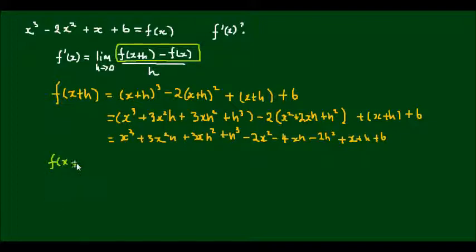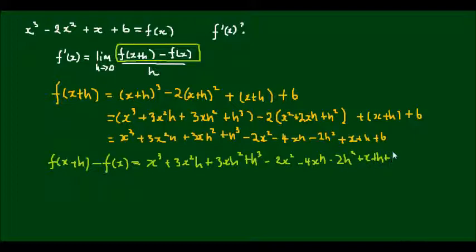So f of x plus h minus f of x, and I'll simply copy down what I've just done, so x cubed plus 3x squared h plus 3xh squared plus h cubed minus 2x squared minus 4xh minus 2h squared plus x plus h plus 6, and I'm going to take away x cubed minus 2x squared plus x plus 6.